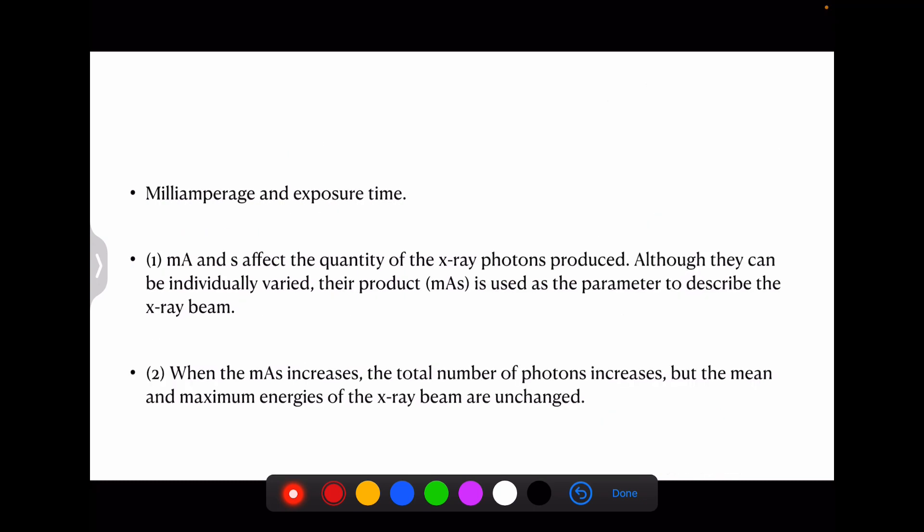Now coming to the milliamperage and the exposure time. The milliamperage and seconds which is the exposure time affects the quantity, not the quality of x-ray photons. Although they can be individually varied, the product of the current and exposure time is used as the parameter to describe an x-ray beam, which will be further described in upcoming videos. When amperage and exposure time increases, total number of photons also increases, but the mean and maximum number of energies remain unchanged.